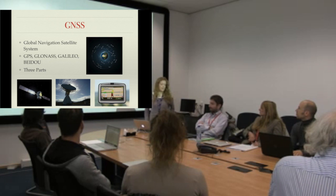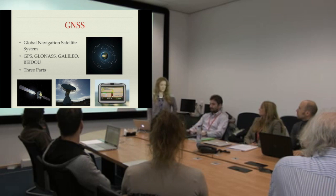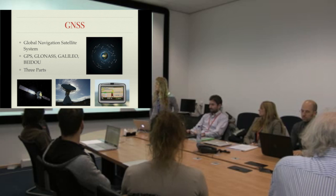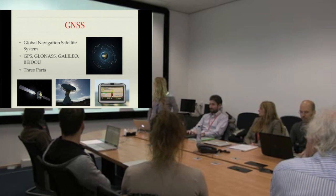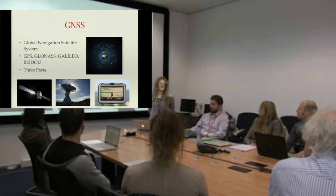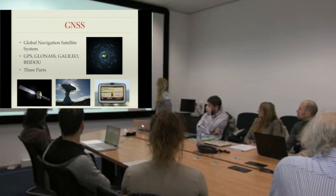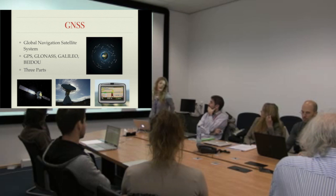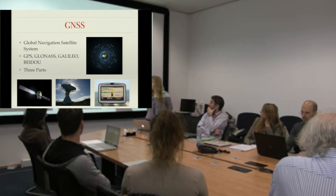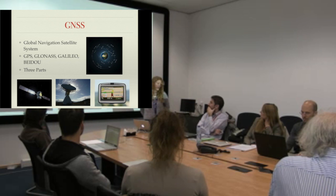It normally consists of 24 to 32 satellites orbiting the earth. The system is comprised of three parts: you have your satellites in space, the ground segment control, and then the users. Basically, you have the satellites in space which normally have atomic clocks on board, and they signal down to the ground stations which are controlled by the relevant space agencies.